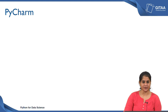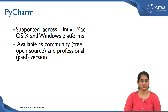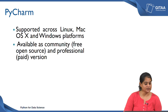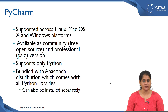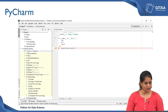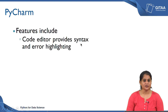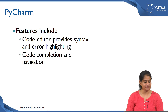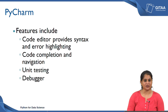PyCharm is also supported across all OS systems — Linux, Mac, and Windows. It has two versions: a community version which is open source, and a professional version which is paid. PyCharm supports only Python and is bundled with the Anaconda distribution, though it can also be installed separately. Its interface has a well-defined structure for naming directories and a scripting window. Features include a code editor with syntax and error highlighting, code completion and navigation, a unit testing tool, a debugger, and version control.